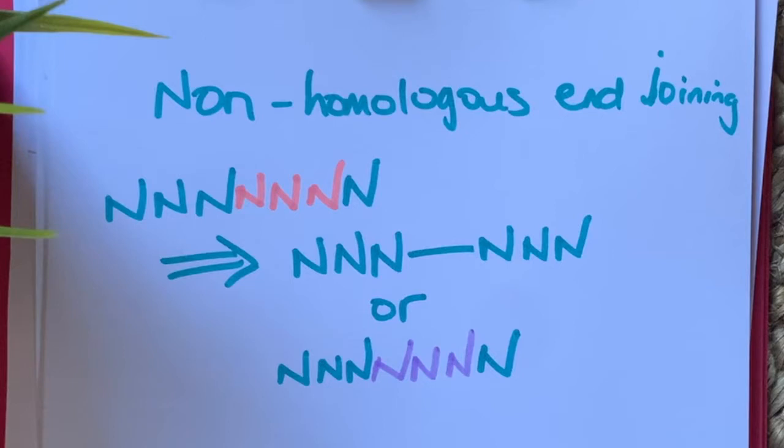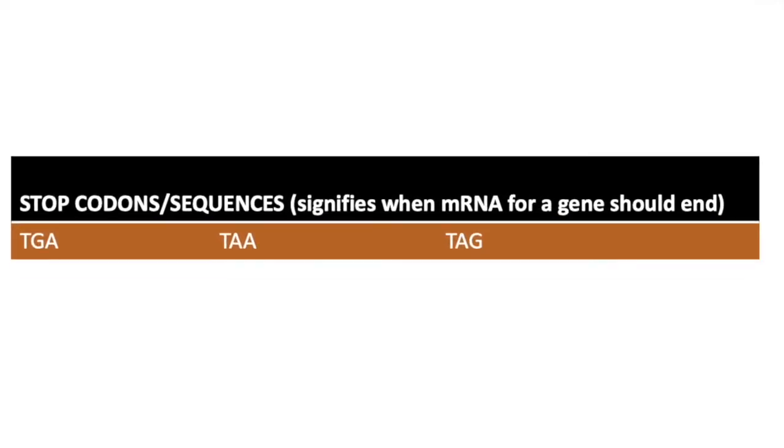Normally, there are codons that specify the end of a transcript. So just a reminder, you can have TGA or TAA or TAG. And where you have a frame shift mutation due to insertions or deletions, you may come across this stop codon earlier than should be the case.